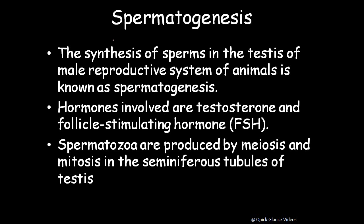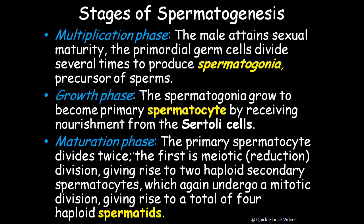Spermatogenesis is the synthesis of sperms in the testis of the male reproductive system. The hormones involved are testosterone and follicle-stimulating hormone. Spermatozoa are produced by meiosis and mitosis in the seminiferous tubules of the testicles. Let's now look at the different stages of spermatogenesis in brief.